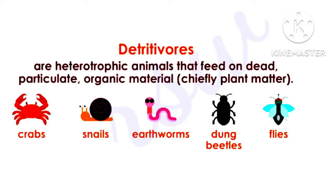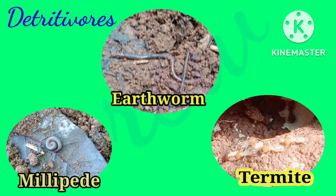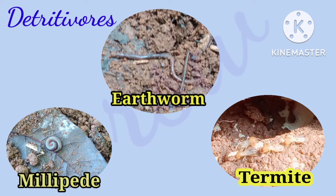Detritivores are heterotrophic animals that feed on dead particulate organic material, chiefly plant matter. Examples include crabs, snails, earthworms, dung beetles, flies, millipedes, centipedes, termites, etc.